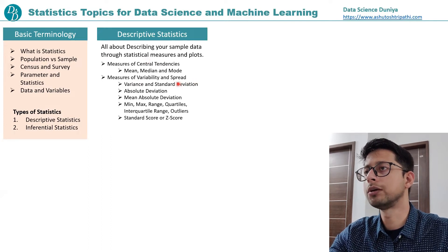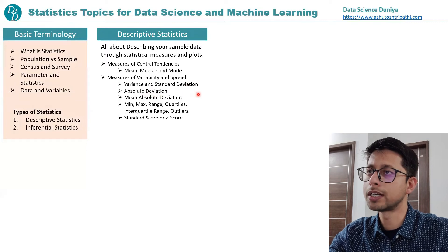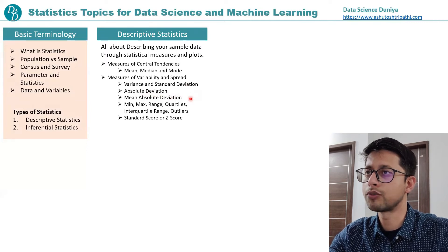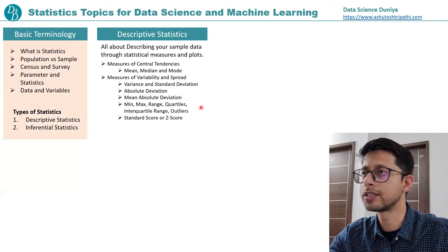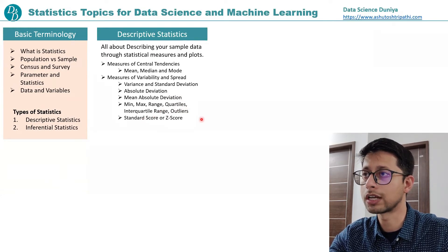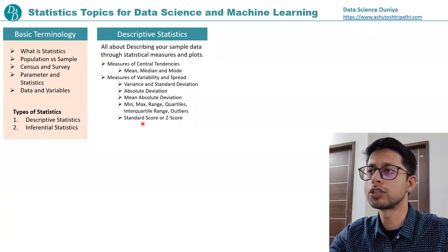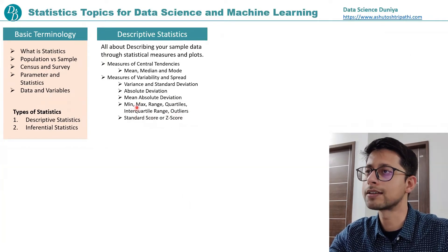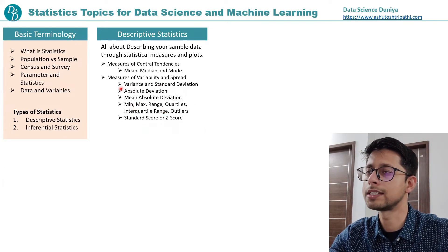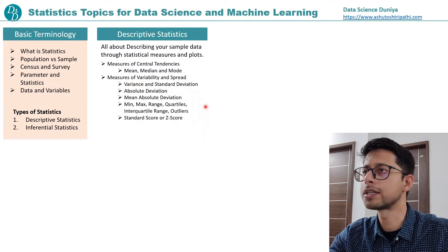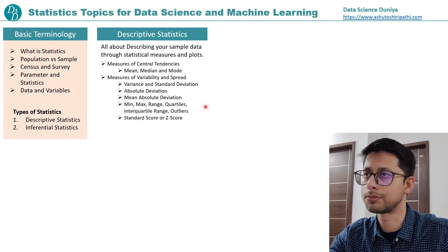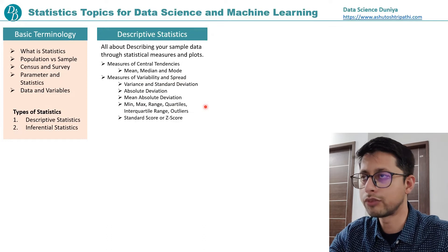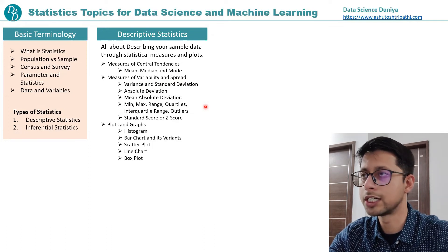Then it comes to measures of variability and spread. Under variability and spread we study variance, standard deviation, absolute deviation, mean absolute deviation, range, outliers, quartiles, interquartile range, and standard score or z-score. The z-score is used to identify outliers, and min-max is used to calculate the range. We will study each one by one in further lectures.